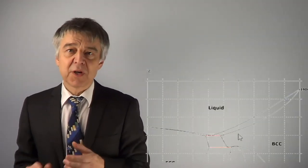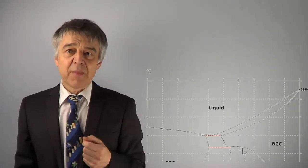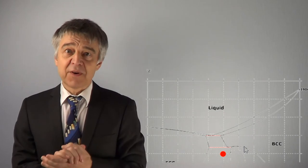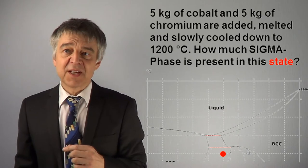We melt 5 kg of cobalt and 5 kg of chromium and allow the melt to cool slowly to 1200°C. What phases are present in our system?